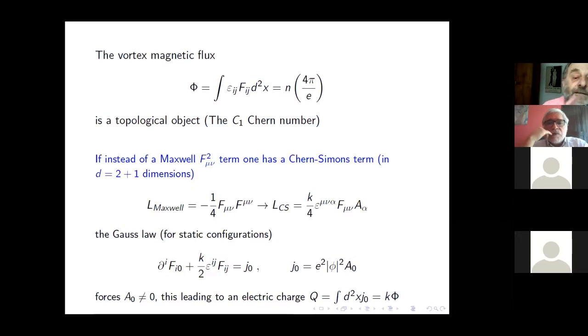Vortices have a flux, and the flux is a topological object. This n is an integer and is known by mathematicians as the c1 Chern number. Another important thing for what I'm going to discuss is that if instead of a Maxwell F squared term in the Abelian Higgs model, one has a Chern-Simons term, that is, one replaces the square of the field strength by the Chern-Simons term, the Gauss law changes.